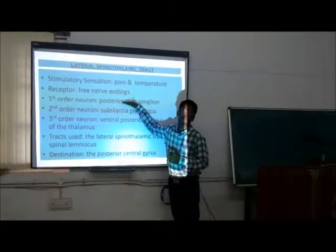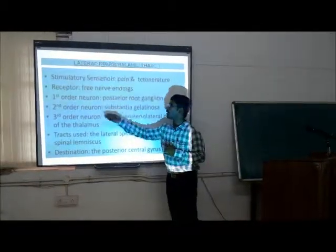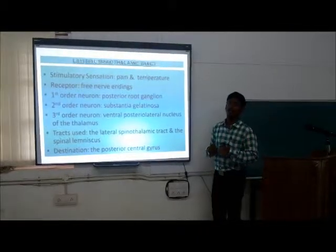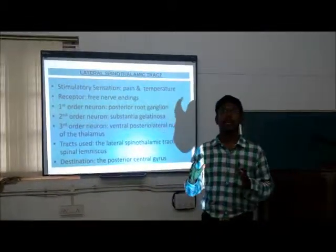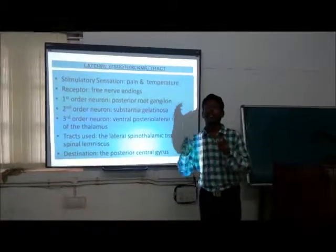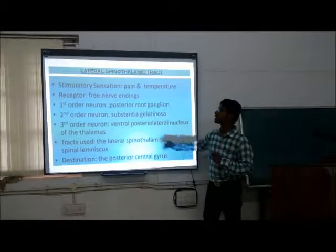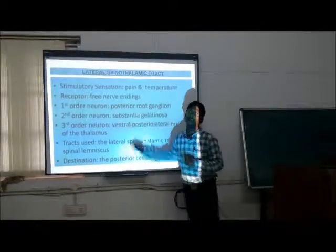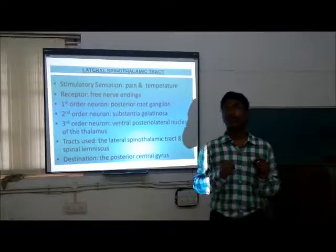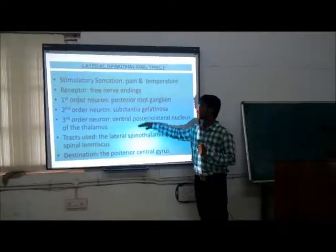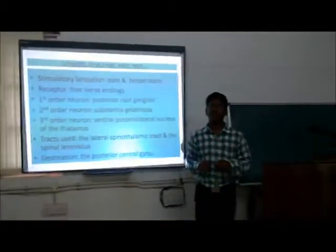This system includes three neurons: the first order neuron, second order neuron, and third order neuron. The first order neuron originates from the receptor and terminates in the dorsal gray matter or dorsal horn. The second order neuron originates from the dorsal gray horn and terminates in the thalamus. The third order neuron originates from the thalamus and terminates in the cerebral cortex.